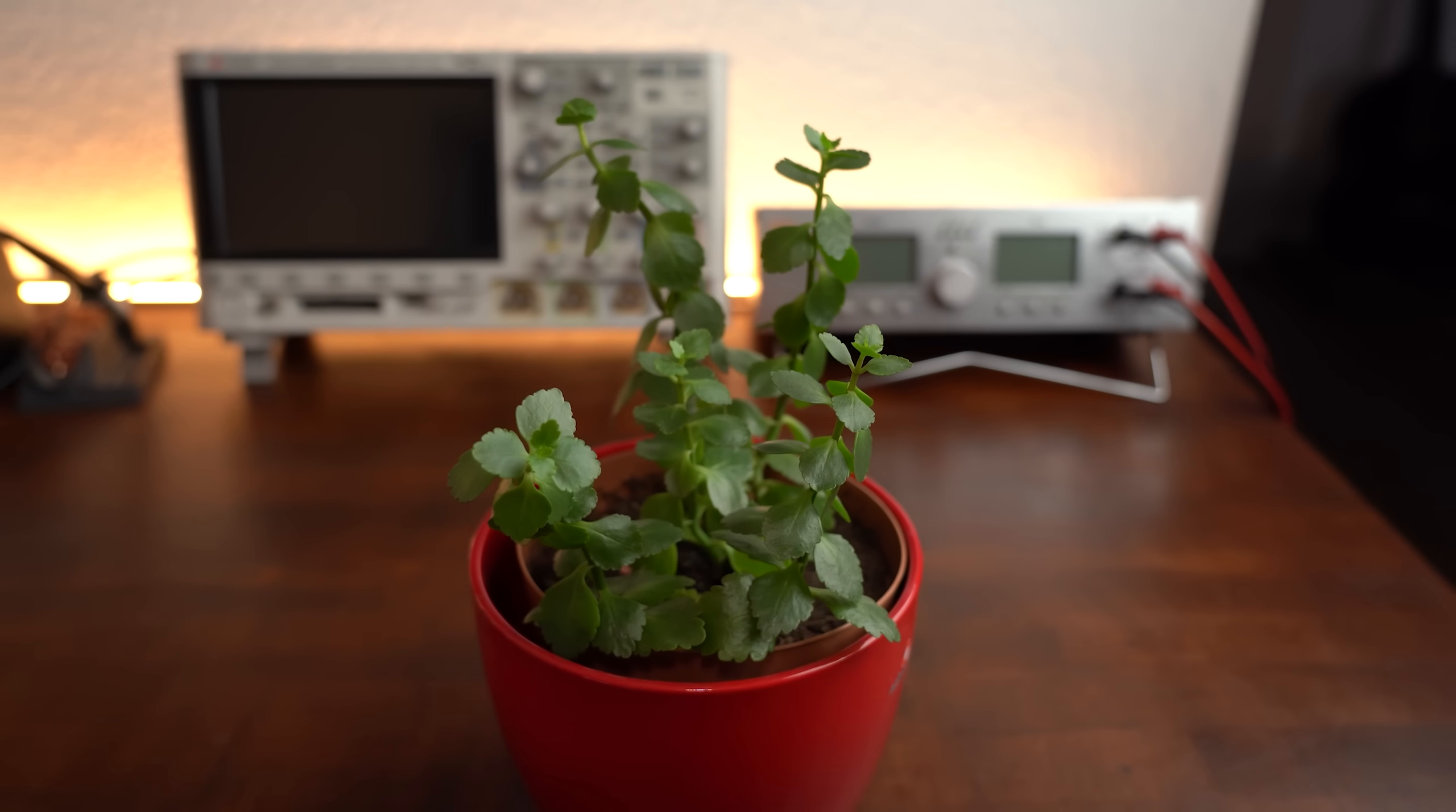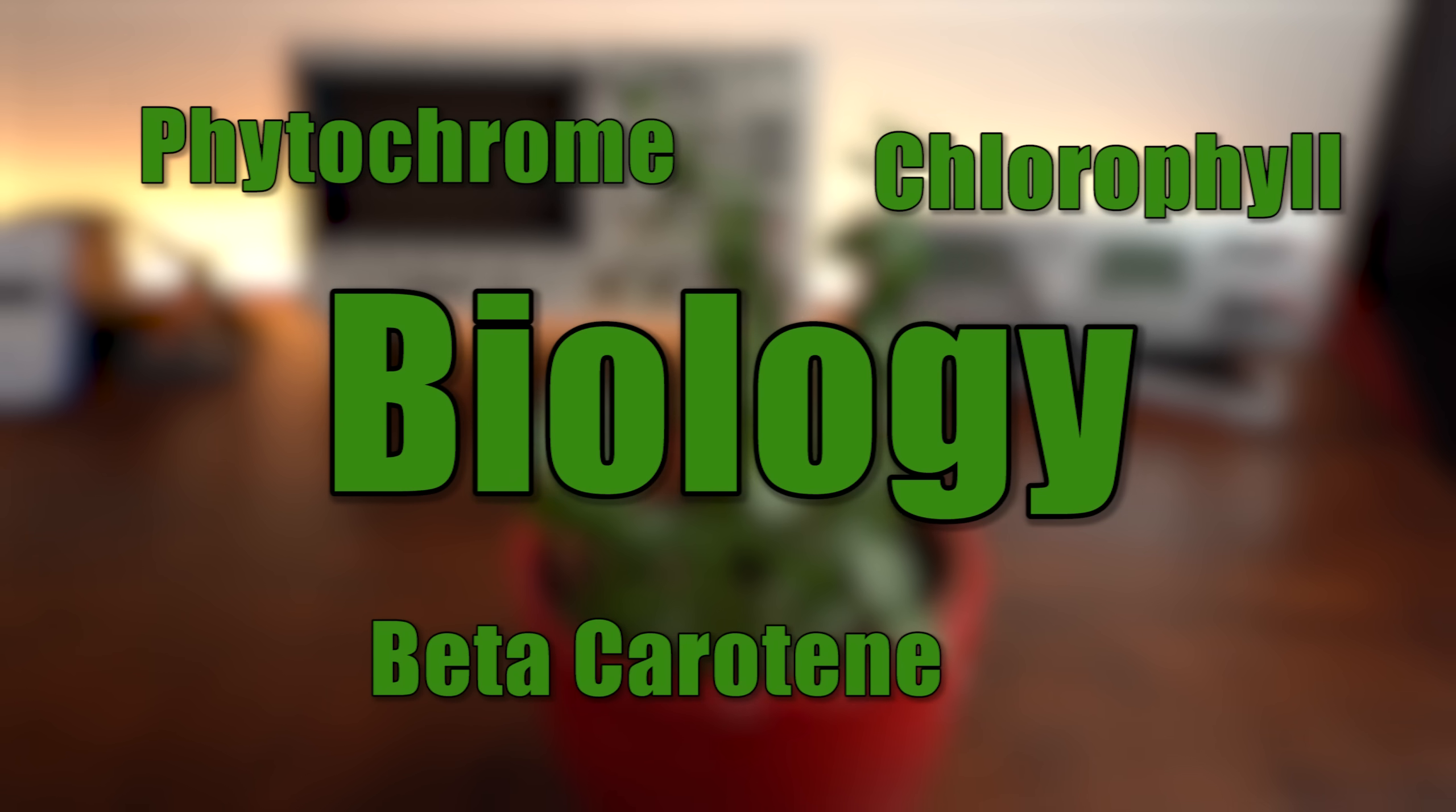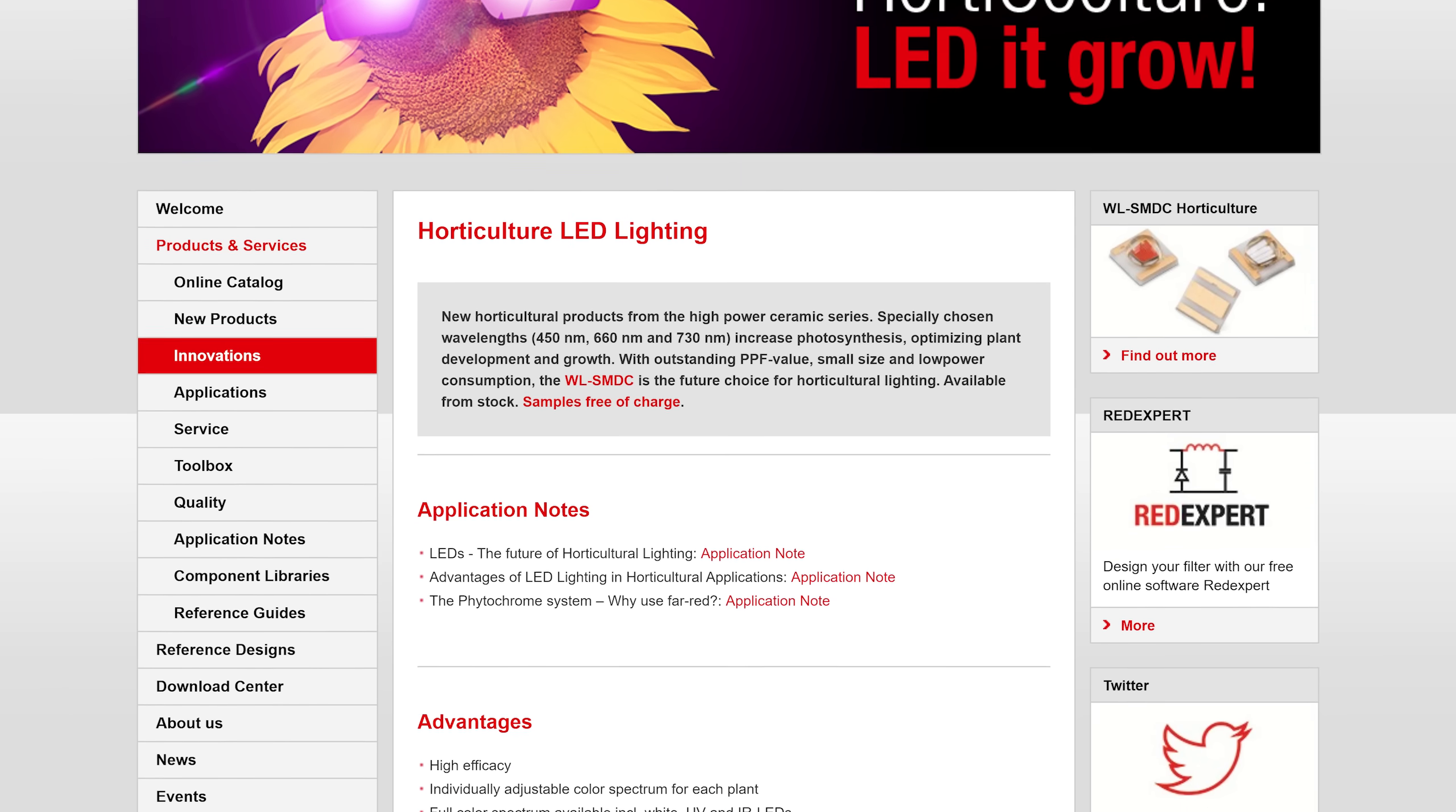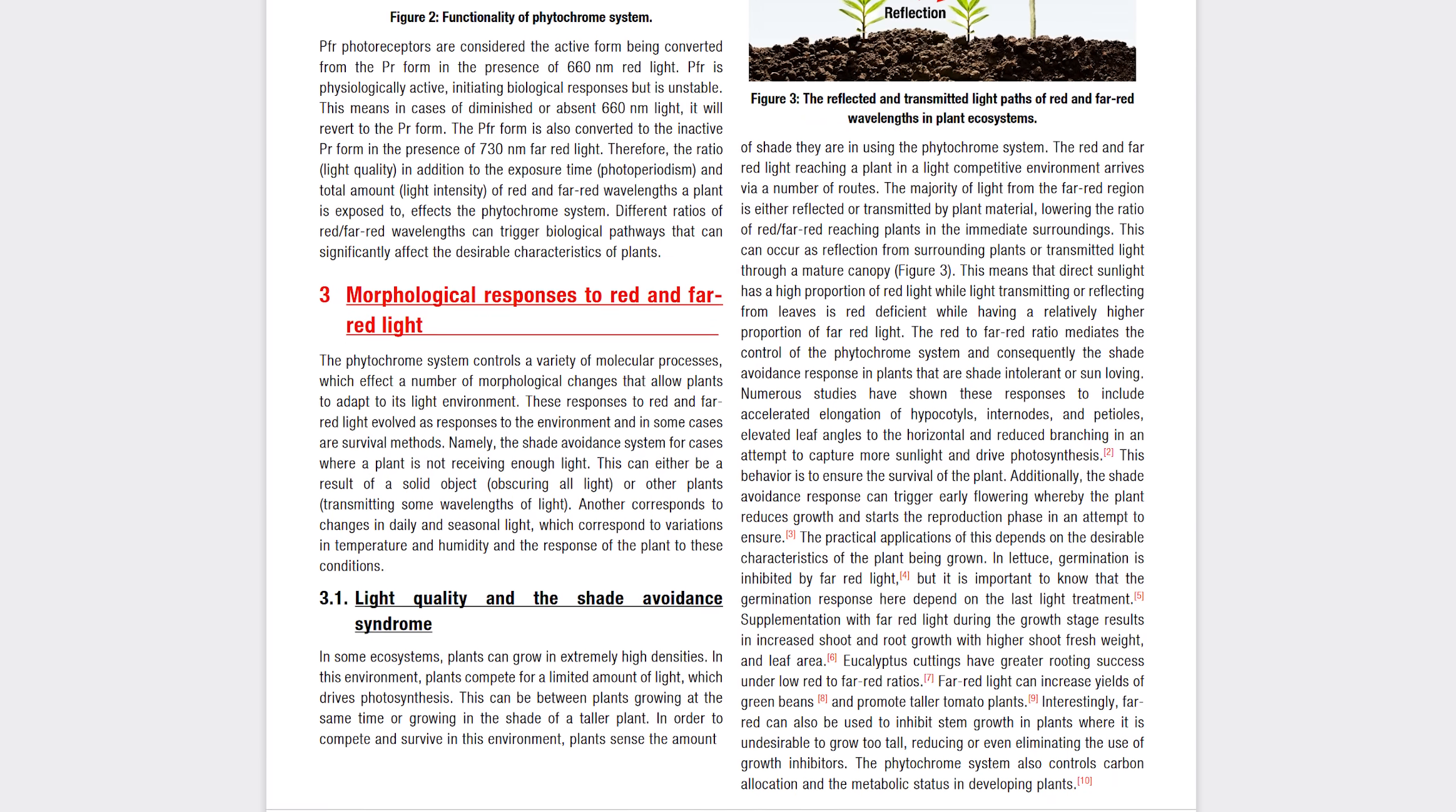When talking about plant growth we cannot avoid talking a bit about biology, which loves to throw around complex technical terms like chlorophyll, beta carotene, phytochrome and much more. That is why I want to keep this biology excursion as simple as possible and recommend everyone who would love to learn more to check out the Wirt Electronic website or video description where you can find very detailed application notes.